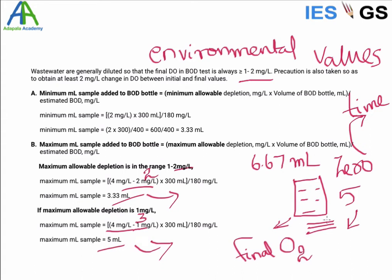And there is another limit: how we should calculate the difference, right? Difference in the value. So for a measurable quantity, this difference should be at least 2 ml. So at least 2 ml of oxygen should be consumed.